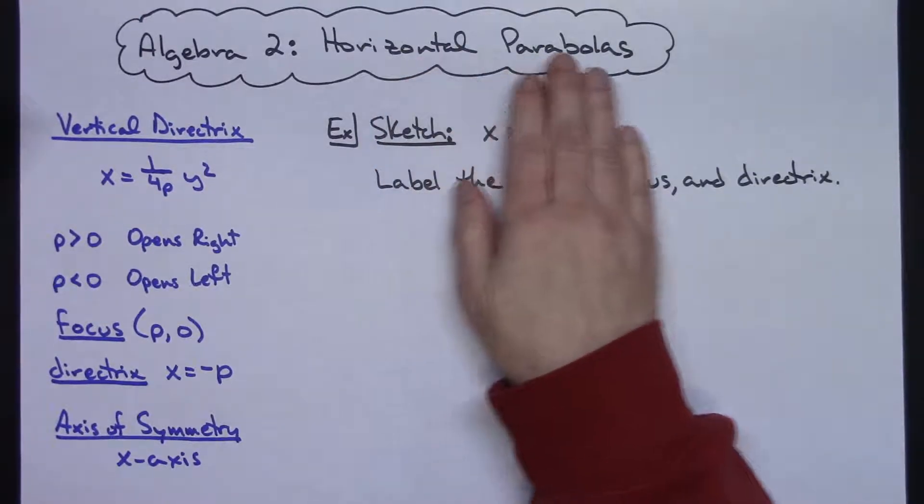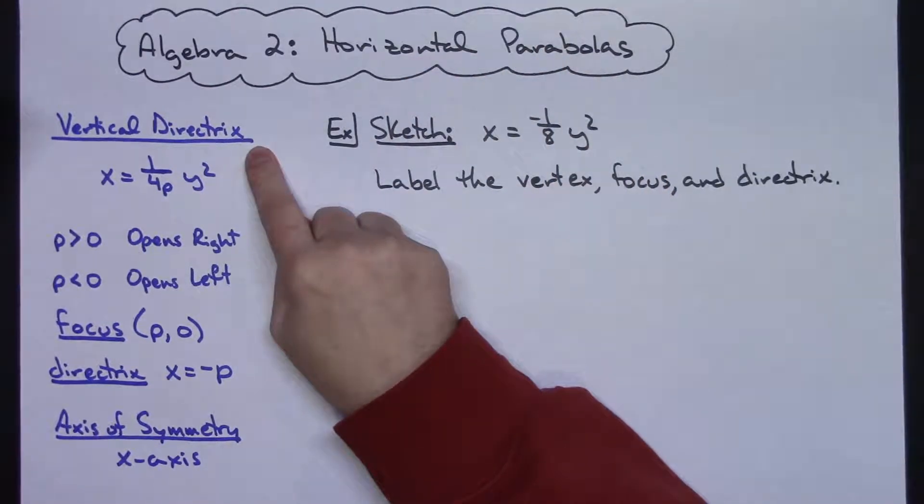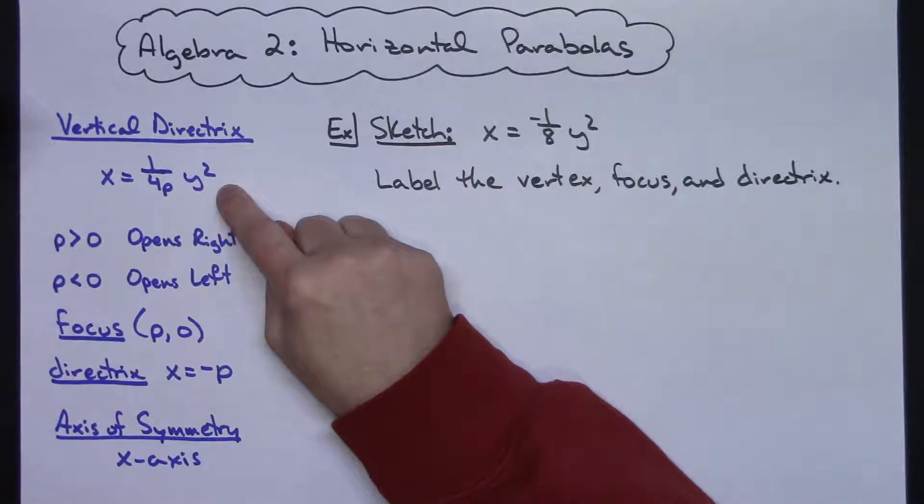If we've got a horizontal parabola then we know we have a vertical directrix, and that formula is going to be given to us as x equals 1 over 4p y squared.